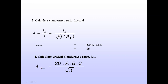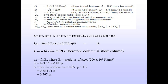We then calculate the actual slenderness ratio, which is equal to the moment of direction divided by the moment of inertia. We also calculate the critical slenderness ratio, where lambda limit equals 20ABC divided by the square root of n.